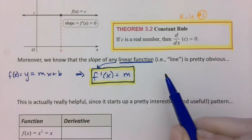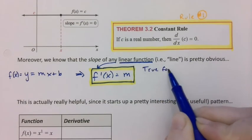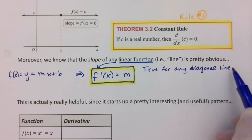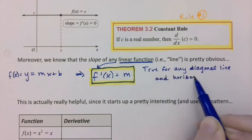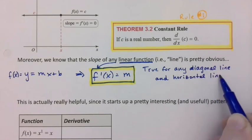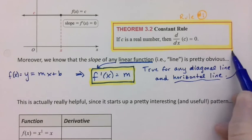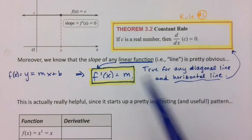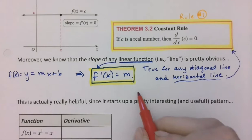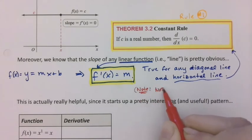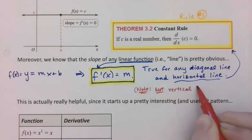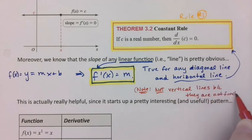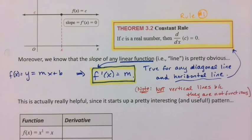So let me make a note. This is true for any diagonal line and also any horizontal line, because a horizontal line is actually the one that's up above in the constant rule. But it's also this one. This is kind of the larger case and this is like a special case of this. But it's not true for vertical lines because vertical lines are not functions.